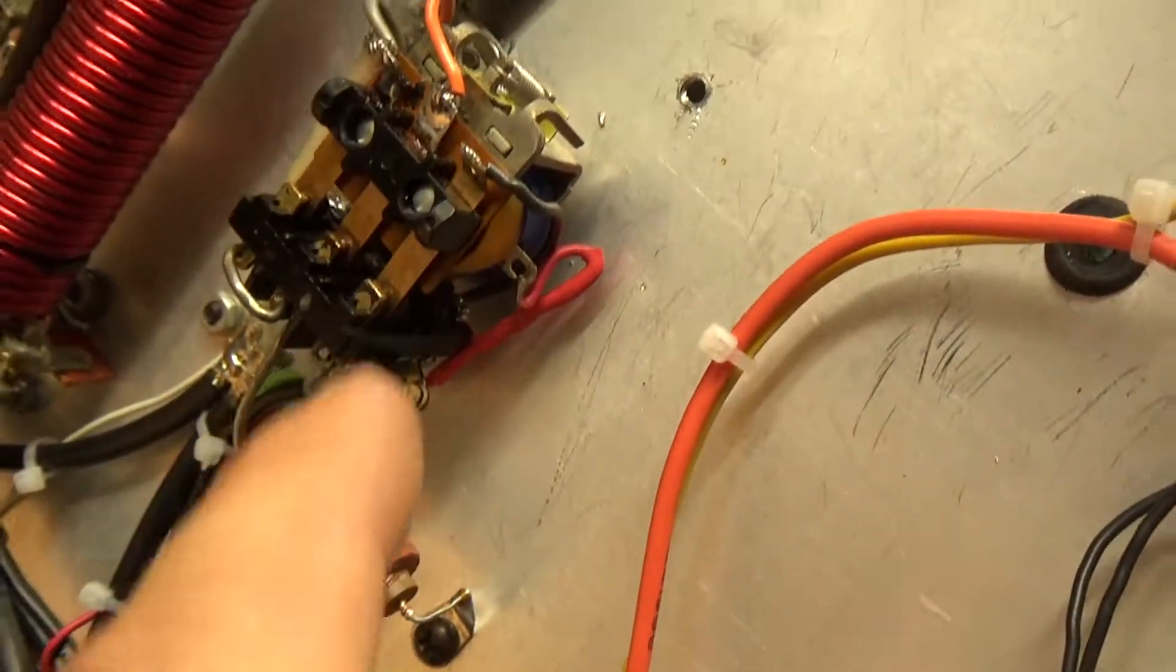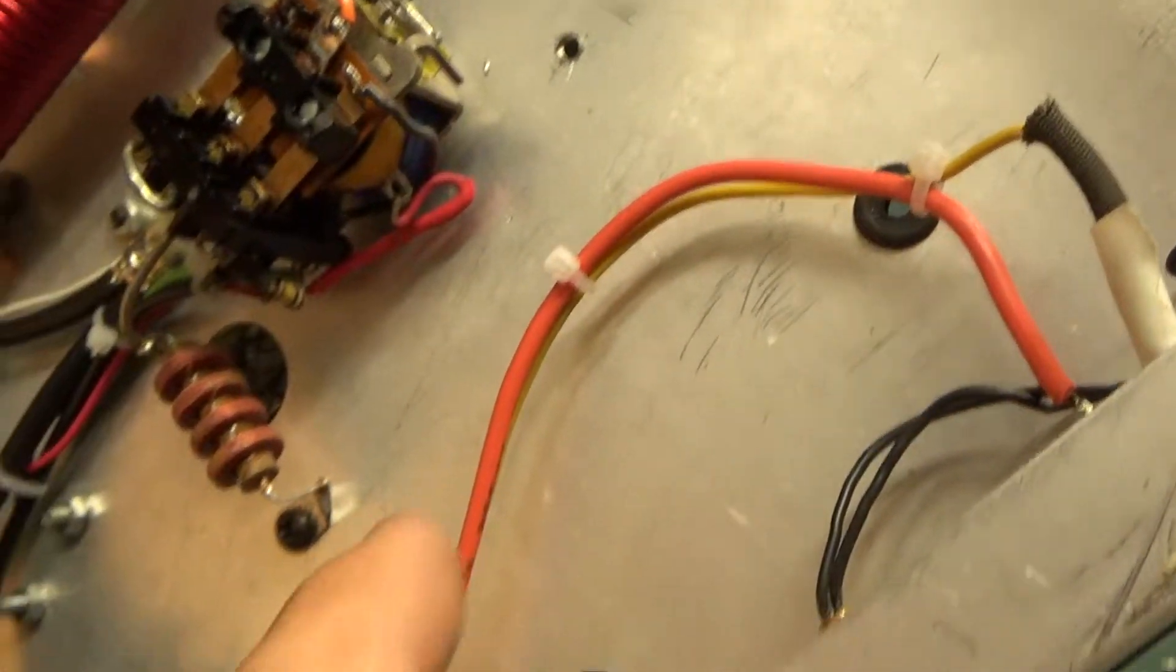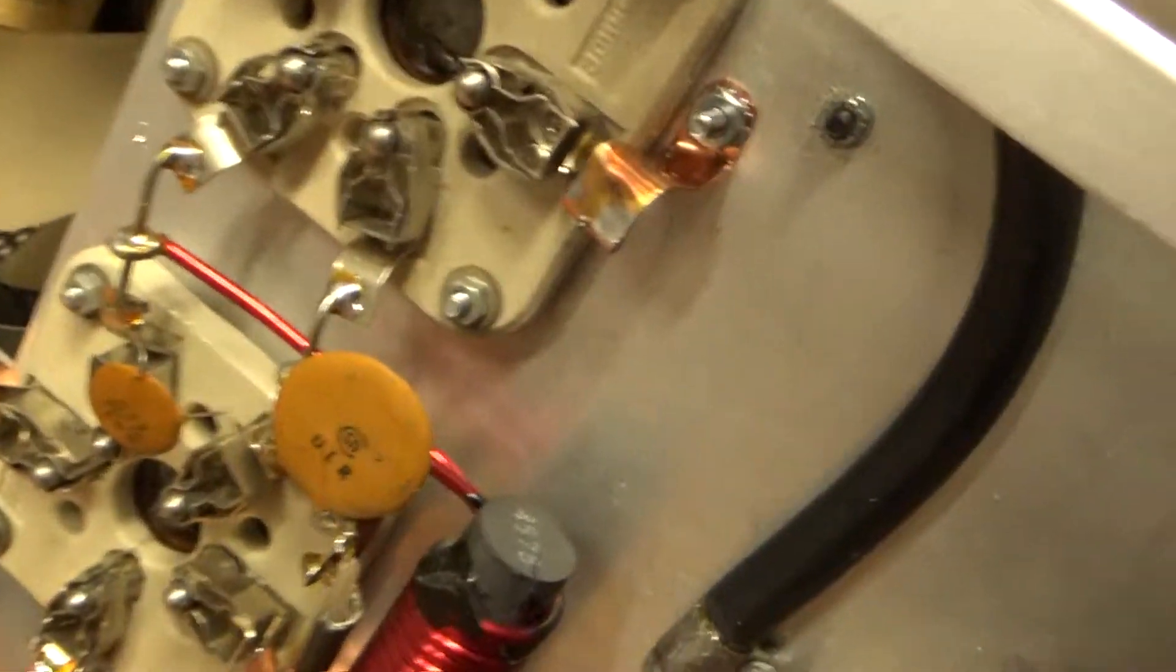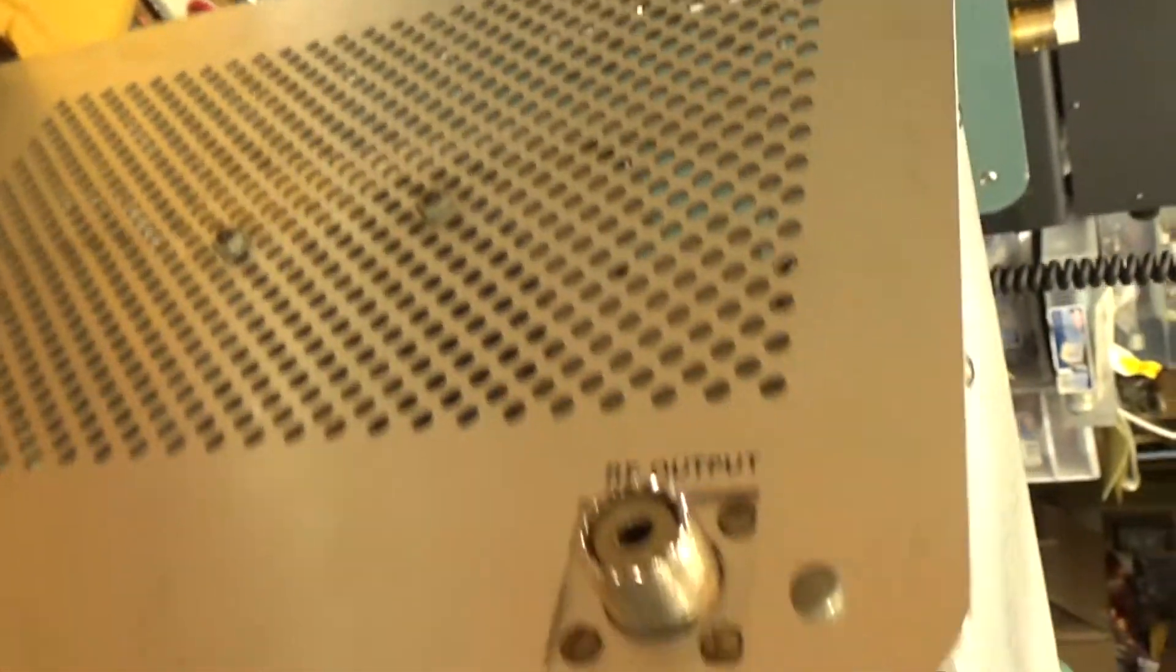Ended up doing the bias mod. Zip tied all of this together. Checked the SO239 connectors, nice and tight. Pins are tight, so I left those alone.